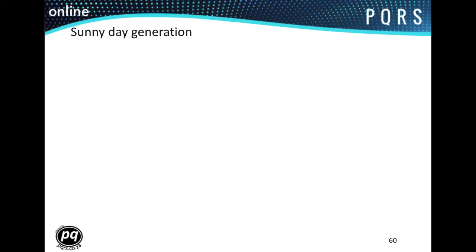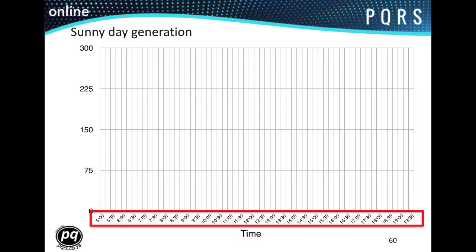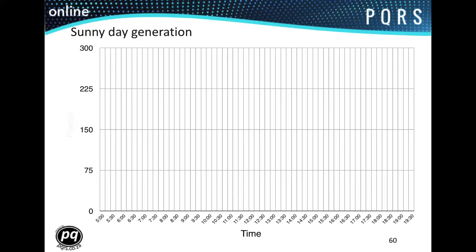Let's look at the production of a 300W solar panel in the Johannesburg region. On this slide we have a graph showing the x-axis representing time, covering a full day starting at 5 a.m. and finishing at 7:30 — almost 14 hours of daylight. The y-axis represents power and shows the power output of the panel throughout the day.